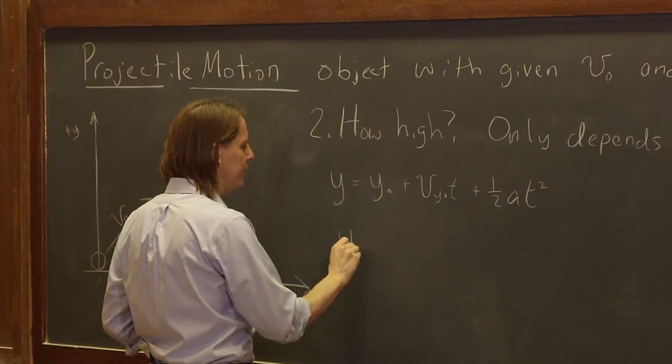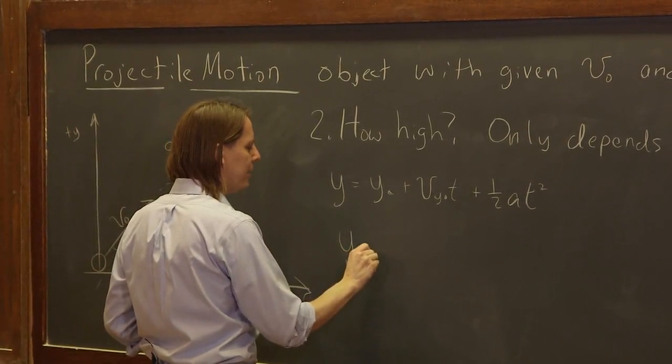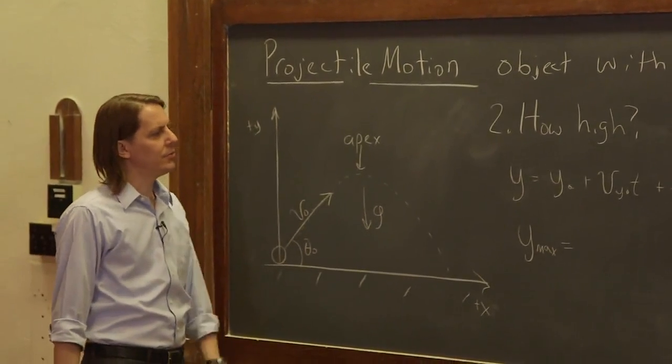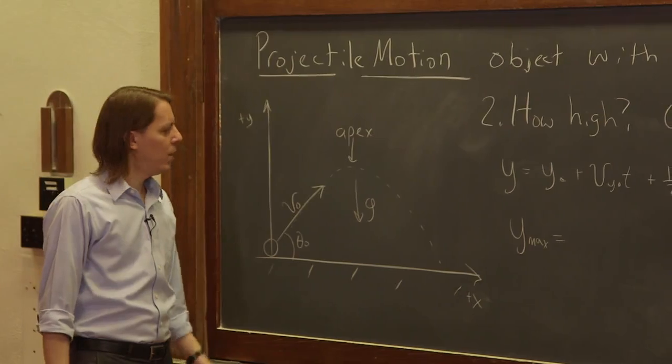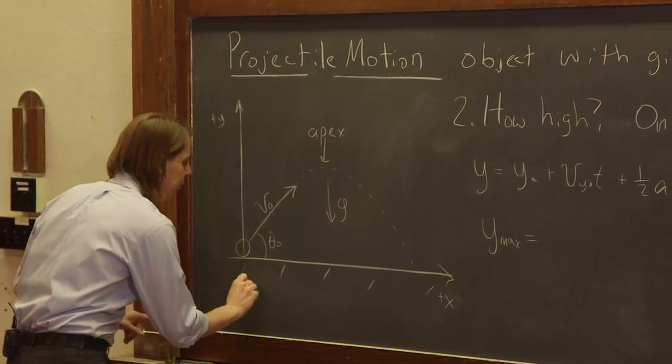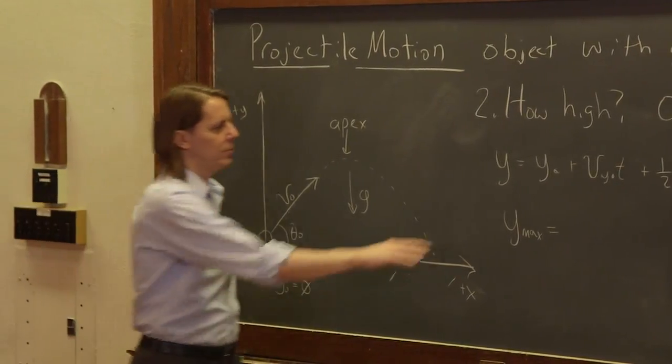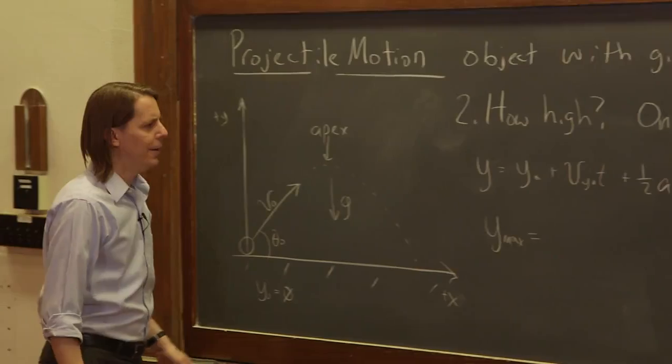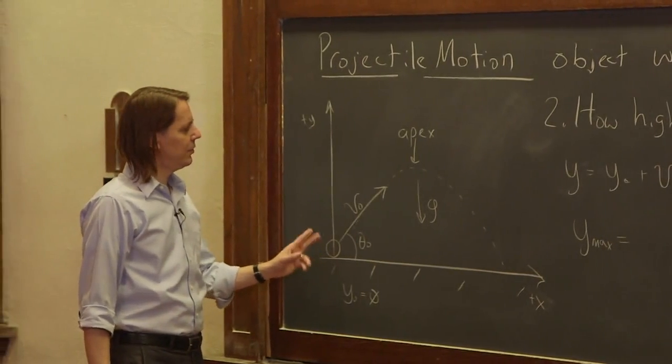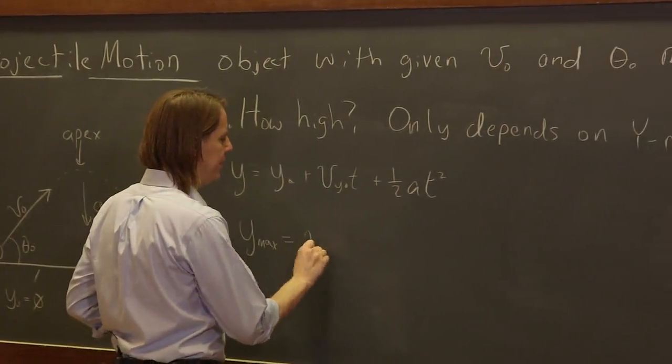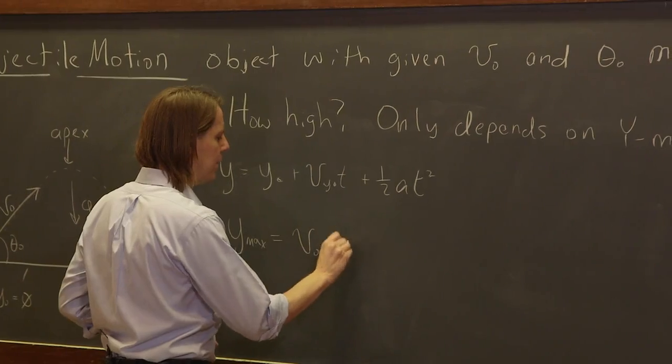Now we're finding specifically y max, the maximum height it reaches. Let's start plugging in for y max. Well, y naught is zero, right? The initial condition is that it starts at the origin, zero height, so we just leave that out. v y naught, the initial velocity in the y, is v naught sine theta naught, the component of the initial velocity.